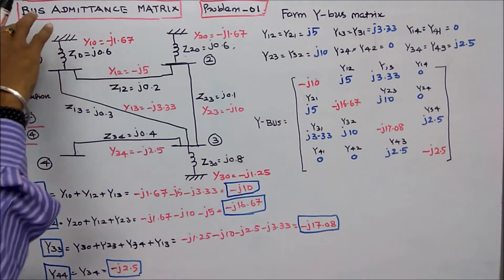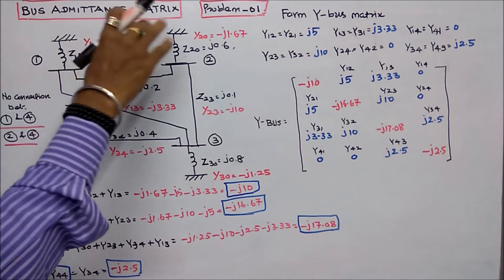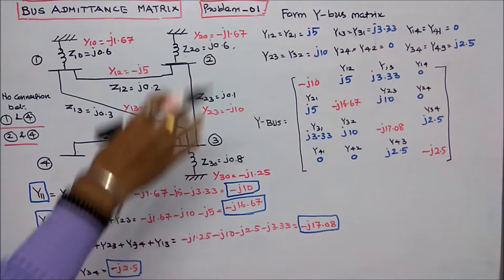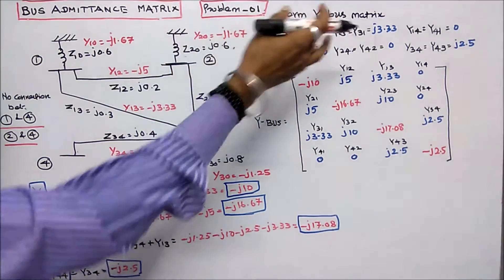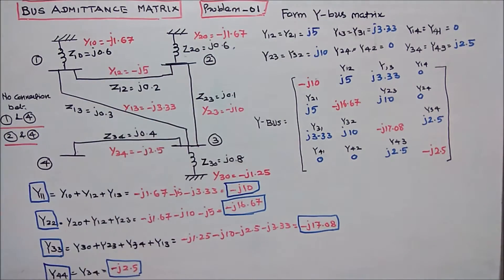In this class, we work out two problems on the bus admittance matrix. Problem number one: form the Y bus matrix for the system shown in the figure.